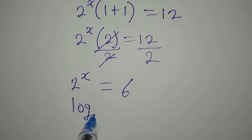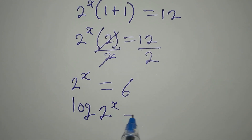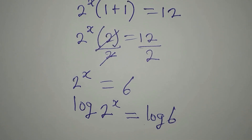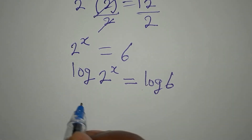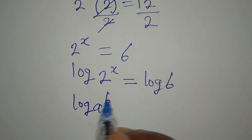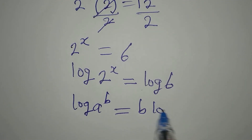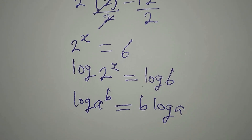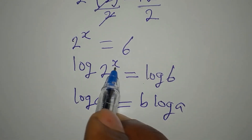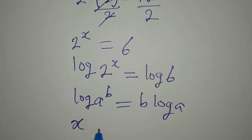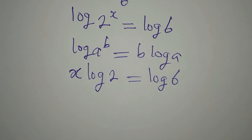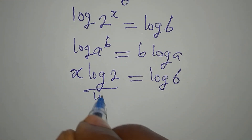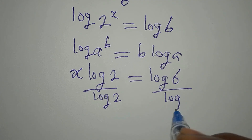So what we'll do is take the log of both sides: log of 2^x equals log of 6. There is a rule about the power — if you have log of b to the power x, this is the same as x times log of b, meaning the power comes down in front. So we have x times log 2 equals log 6. Since we are looking for x, we divide both sides by log 2.